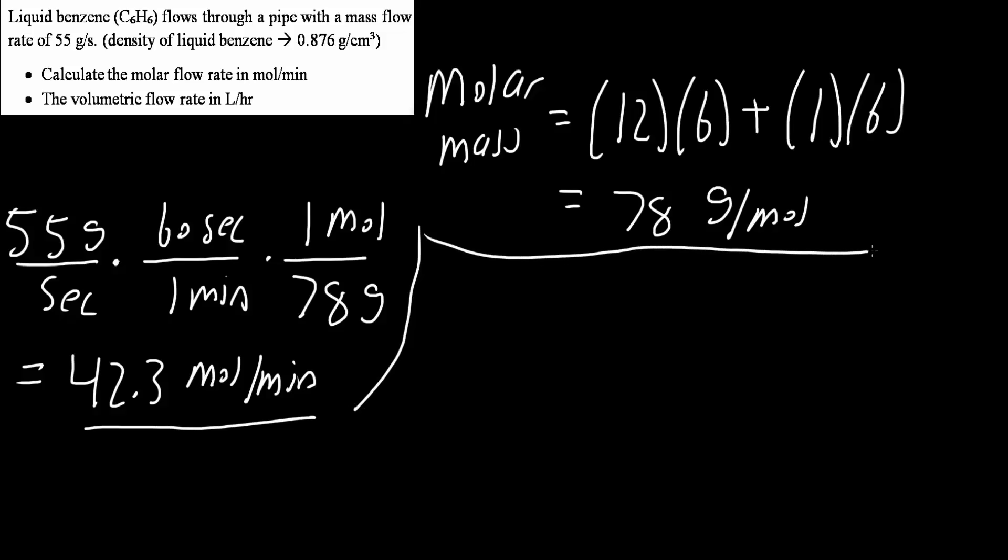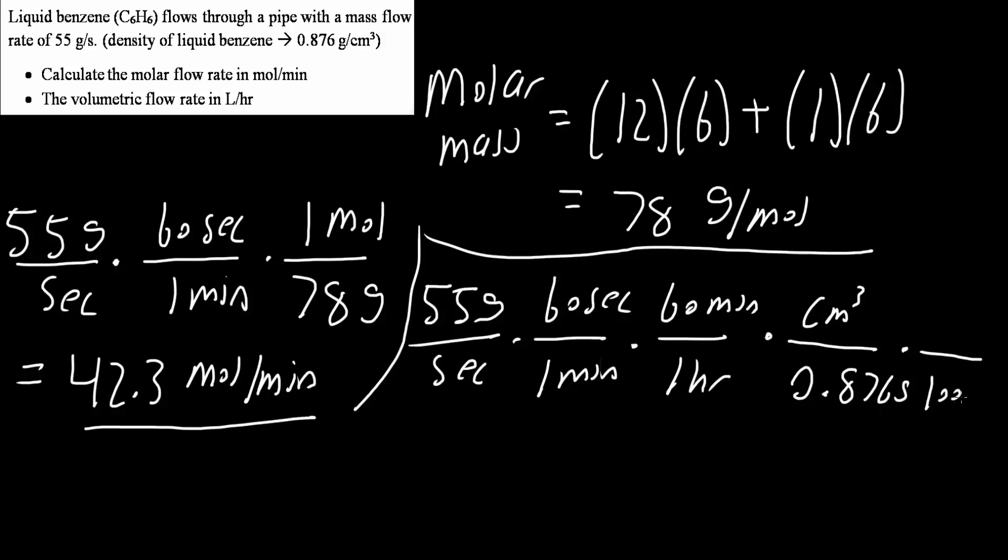Now we will do the second problem, calculate the volumetric flow rate. We have 55 grams per second. 60 seconds is 1 minute, and 60 minutes is 1 hour. Now we need to get liters using density. We have 0.876 grams per centimeter cubed, which gives us volume. Last step, we want to get liters. 1,000 centimeter cubed is 1 liter. If we multiply everything out, we get 226 liters per hour.